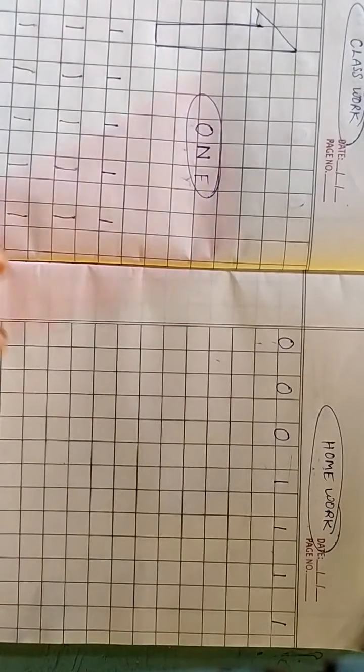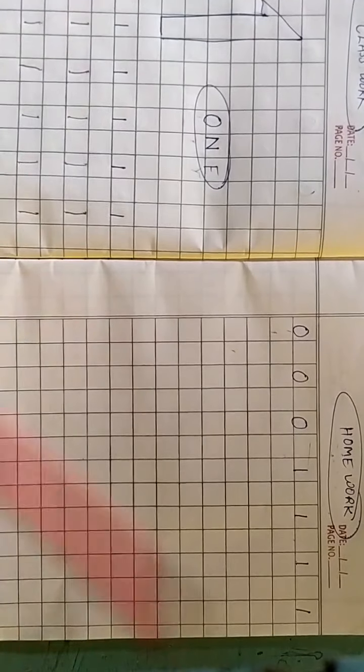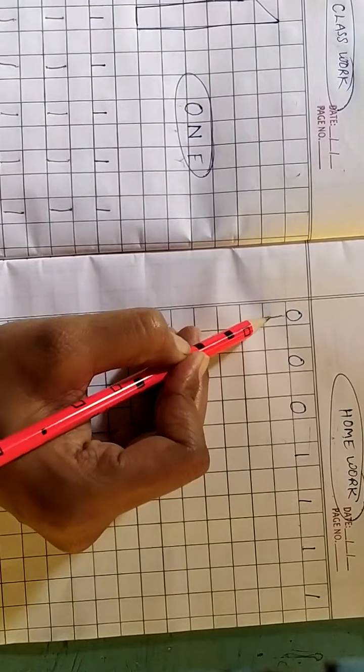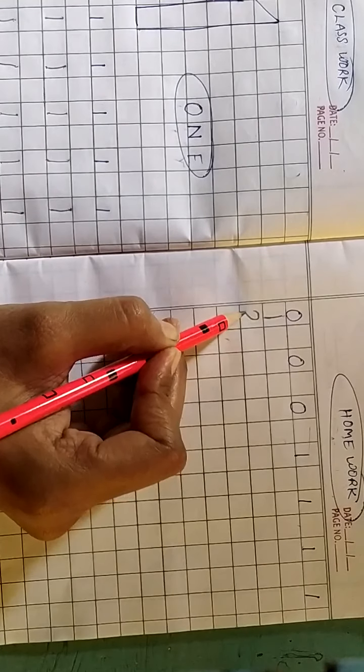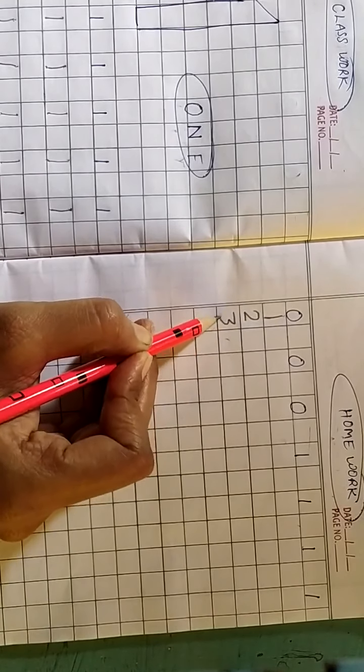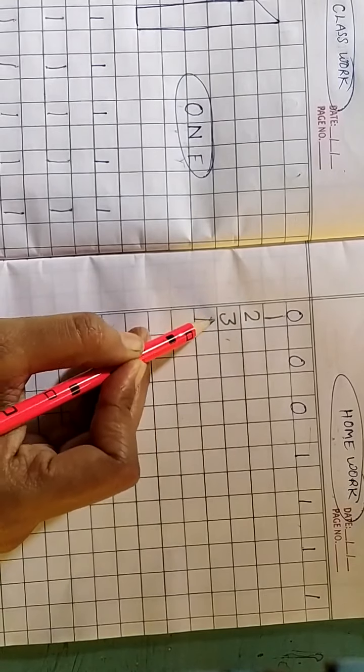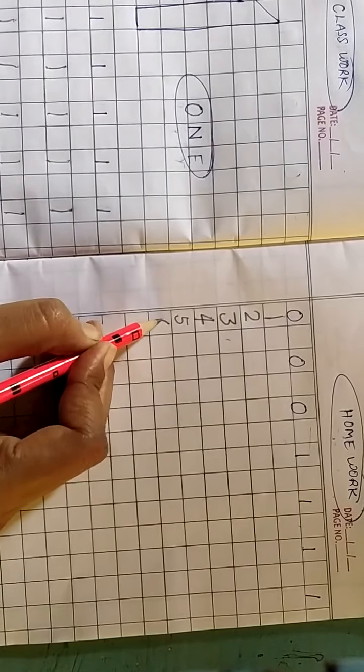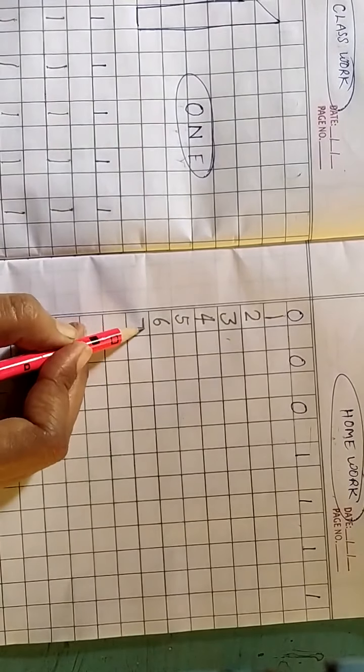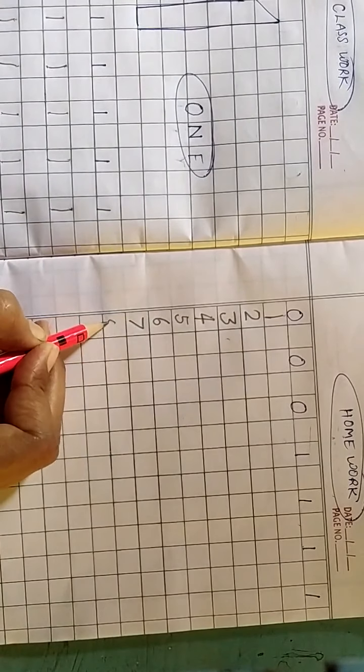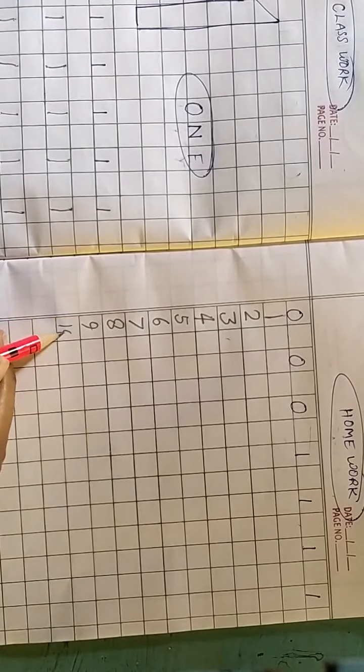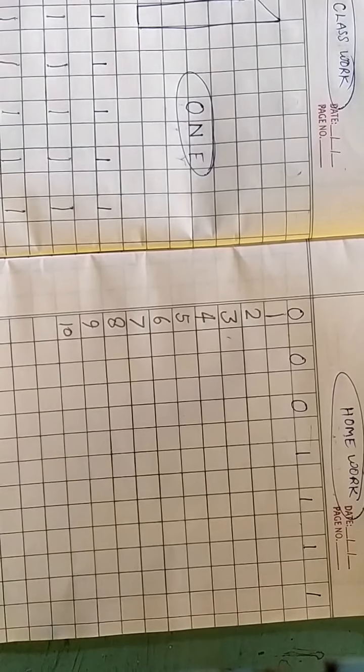Let's start reading. Okay? 0, 1, 2, 3, 4, 5, 6, 7, 8, 9, 10. Okay?